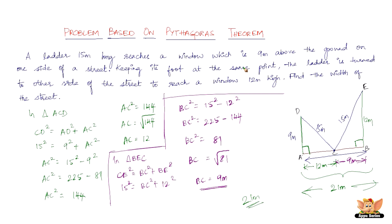All you needed to know was the Pythagoras theorem. There were two right angle triangles, and we applied the theorem to each to find the third side — AC = 12 meters and BC = 9 meters — which together make up the width of the street: 12 + 9 = 21 meters. I'll see you with more problems and concepts in the forthcoming videos.